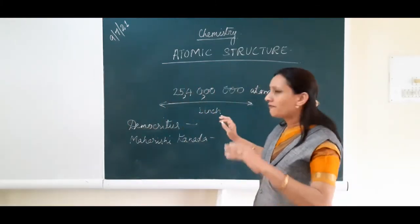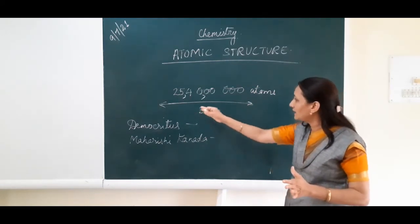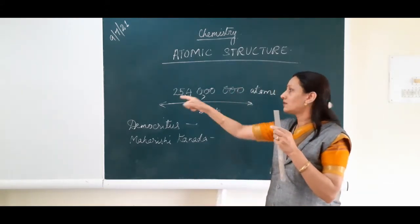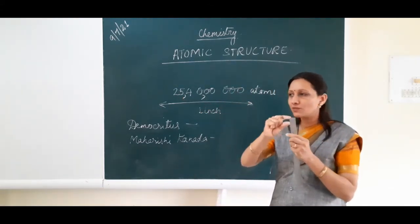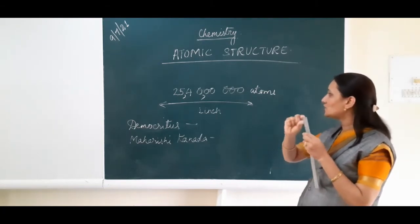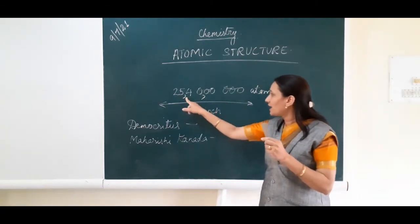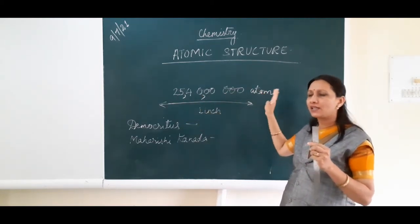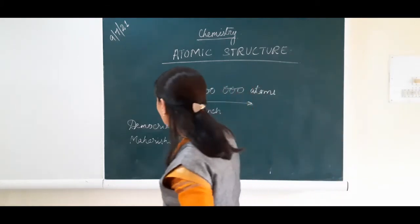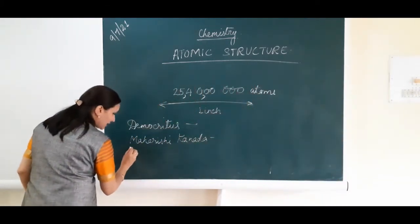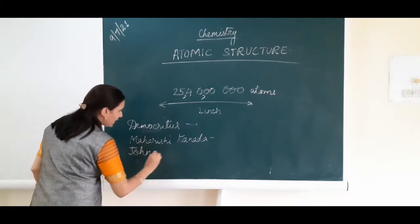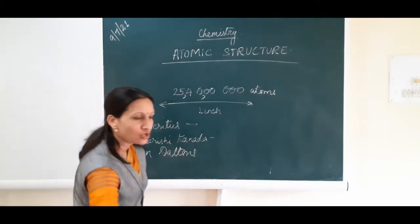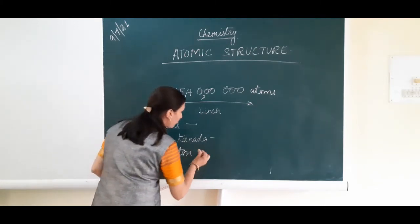These are very very tiny particles. 1 inch length can occupy 25 crore 40 lakh atoms if we are placing atoms side by side. After discussing about these scientific thinkers, let us know something about John Dalton. John Dalton proposed the Atomic Theory.